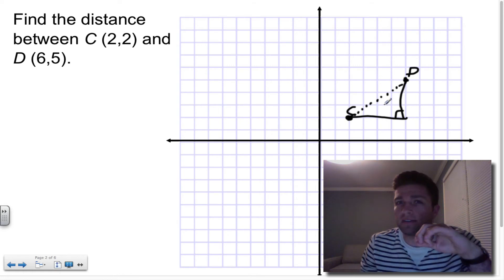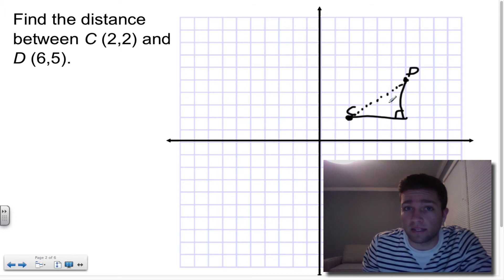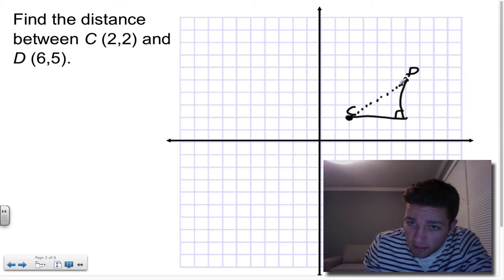Now some of you might already be seeing, I have a right triangle, and if I have a right triangle, I can find any of the sides as long as I know at least two of them.